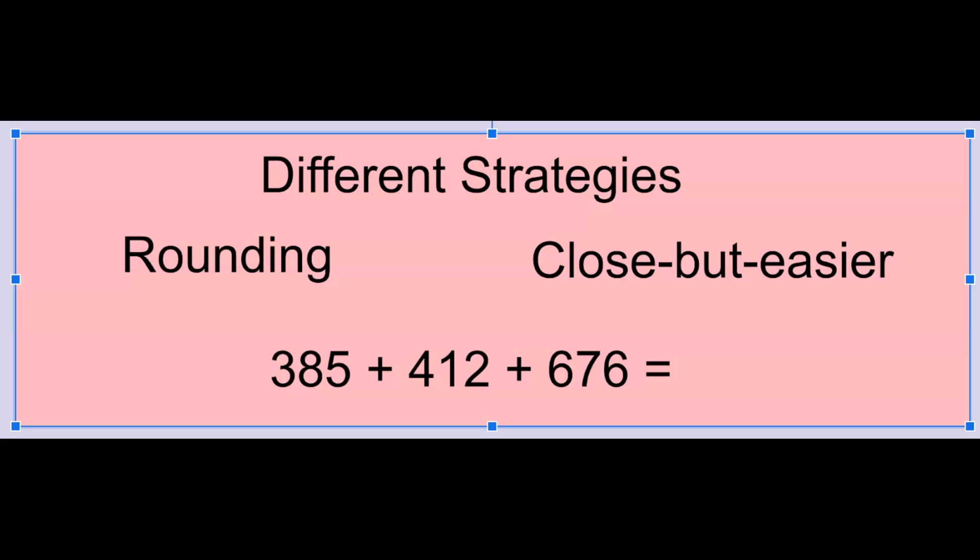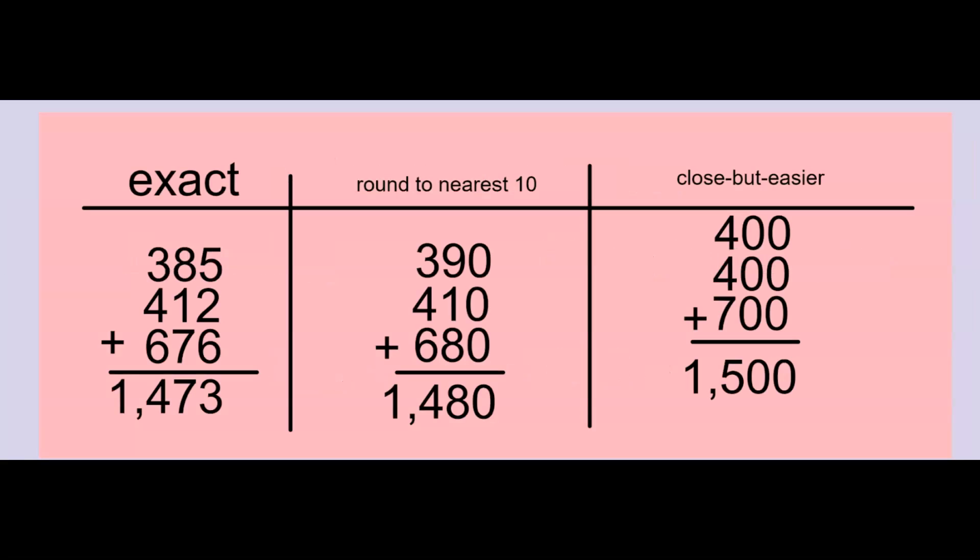So let's say we want to add 385 plus 412 plus 676. Get an estimate by using either rounding or close but easier numbers. So here I've solved. I have the exact answer, 1,473.